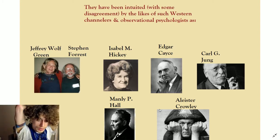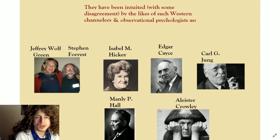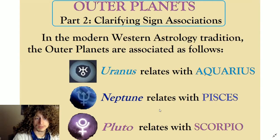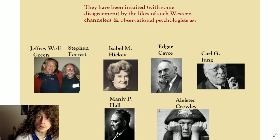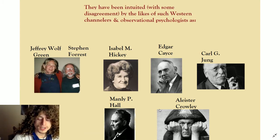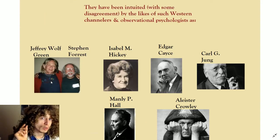The nature of all of these outer planets has basically been intuited by these Western channelers and observational psychologists. The basic guts of these planets, outside the sign associations we see here, have been riffed on by all of these brilliant intellectual thinkers and channelers and intuitors. It's particularly this theme of the sign associations that I'm saying have disagreement, and this is what I'm trying to speak to today.